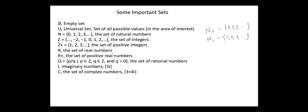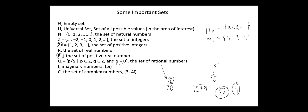Z is the set of integers. Z+ is the set of positive integers. R is the set of real numbers. R+ is the set of positive real numbers. Q is the set of rational numbers, described as {p/q | both p and q belong to Z and q ≠ 0}. A rational number is a number that can be written in the form p/q, where p and q are integers and q ≠ 0. For example, one half is a rational number since it can be written as 3/2. But the square root of 2 is not a rational number, since it cannot be represented as a ratio of two integer numbers. And also, pi is an irrational number.